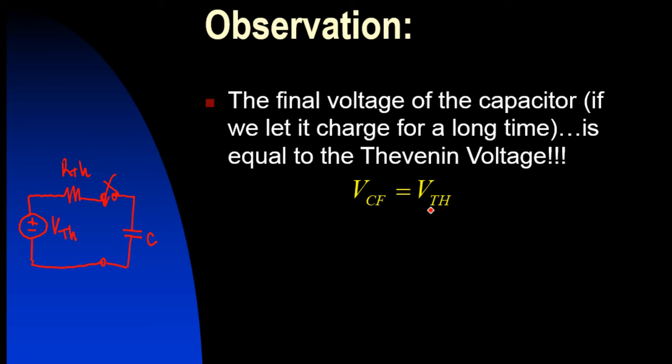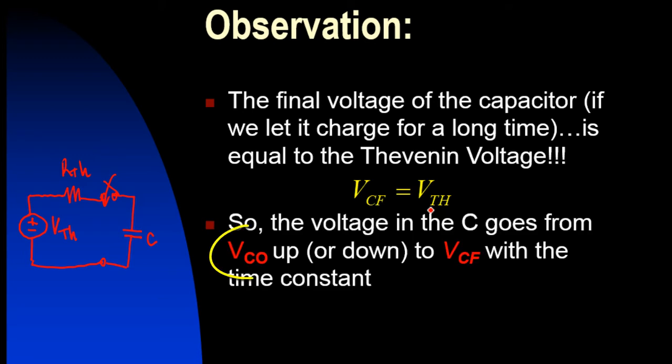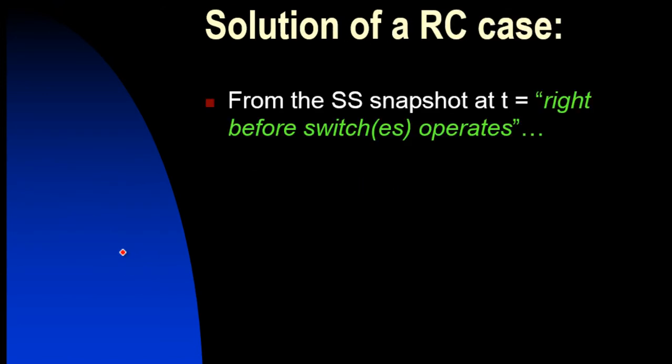We also said that that journey of that voltage from V0 up or down to VTH was taken with the time constant RTH*C. That was enough information for us to write this voltage in the capacitor Vc as a function of time. And that we did.